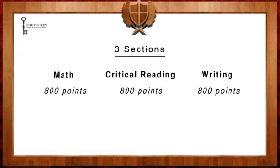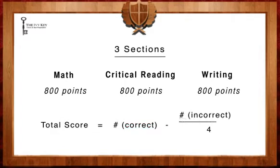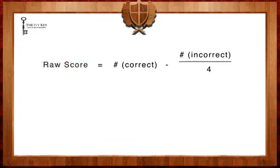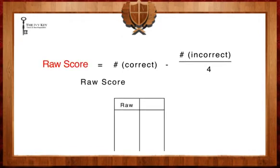A student's score is tabulated by counting the number of questions they answered correctly and subtracting from that number the number of questions they answered incorrectly divided by four. This total will equal the student's raw score. This raw score is matched up with a scale score based on the difficulty of the SAT nationwide. This scale score becomes your final score on the individual section of the SAT.